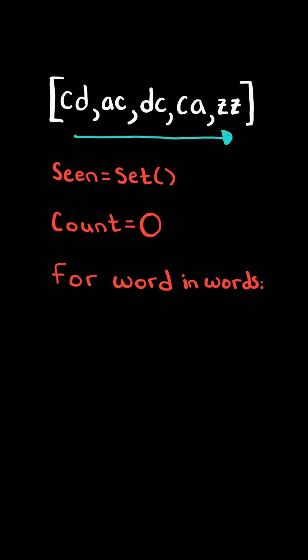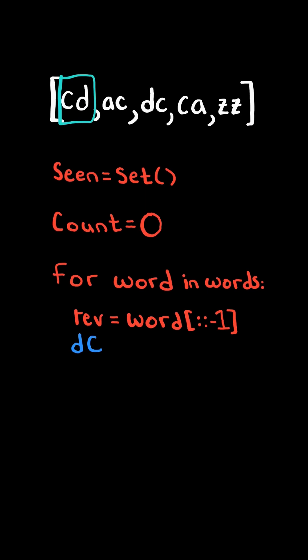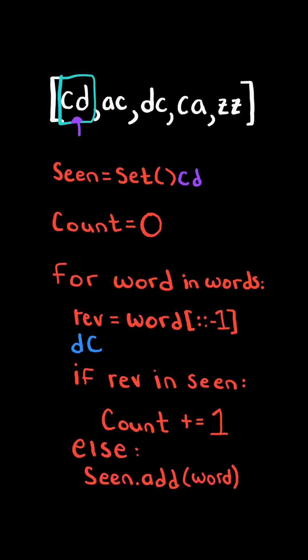We then iterate through the word. We will reverse the current word. This gives us DC. If the reversed word exists in the set, we would increment our count. In this case, the set is empty, so we add the word to our set and we continue.